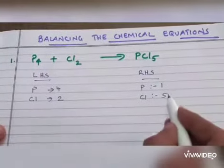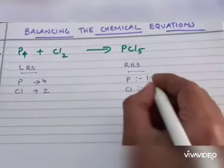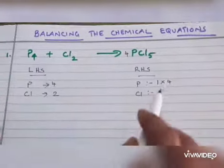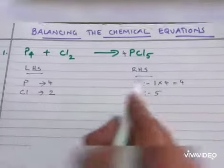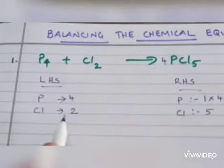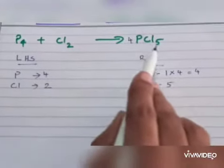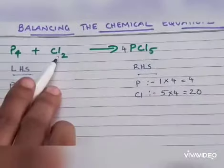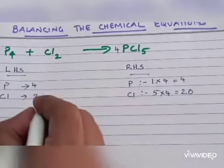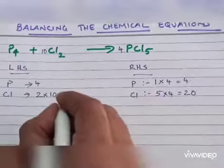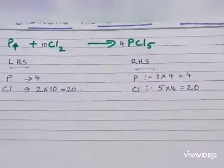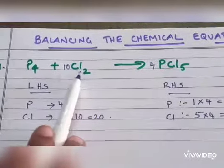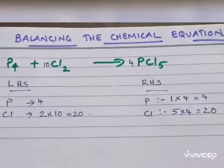Now in order to balance, first we can start with the number 1, so 1 into 4. We are adding 4 coefficient there, so 4P here also, LHS 4P. In LHS, 2 Cl; in RHS, 20 Cl, for 5 into 4 equals 20. So we have to multiply with 10 here in LHS, so now 20 Cl. So P4 here also P4, 20 Cl here also in RHS 20 Cl. Now this is a balanced equation.